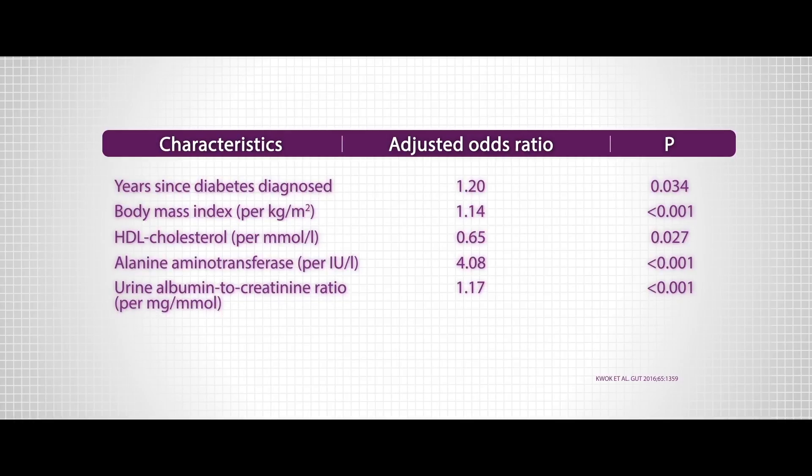Therefore, when selecting patients for liver assessment, doctors may consider specific factors, such as the duration of diabetes, high body mass index, decreased HDL cholesterol, high LT level, and albuminuria. These factors all turned out to be independently associated with increased liver stiffness, as shown in our study.